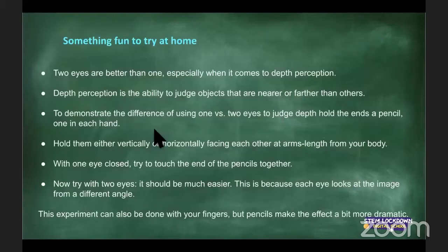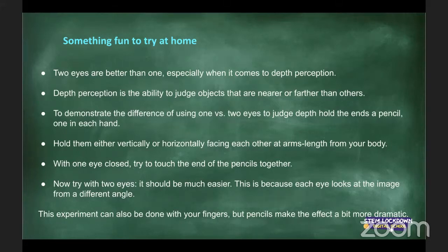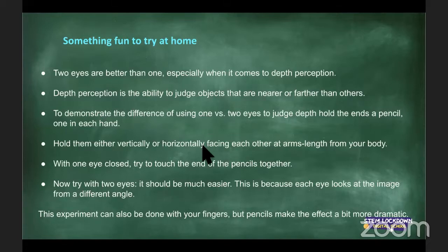Another activity you can do: you need someone to stand three or four meters away with a tennis ball or small object. Toss it back and forth. If you close one eye and they throw the object into the air, it will look as if it comes toward you and you'll misjudge it completely. Trying to catch a ball with one eye closed is much harder because depth perception relies on both eyes.